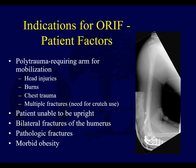Some of the patient factors are: polytrauma patient — not only because the patient is laying flat and unable to participate but also because they need to be mobilized — head injuries, burns, chest trauma, or multiple fractures. Patients who need to use crutches or their arms can't really do that in a brace. Another indication would be a patient unable to be upright, bilateral humerus fractures, pathologic fractures, morbid obesity — because it's very difficult to maintain alignment — and pendulous breasts, where you may have to go to operative management for inability to maintain alignment closed.